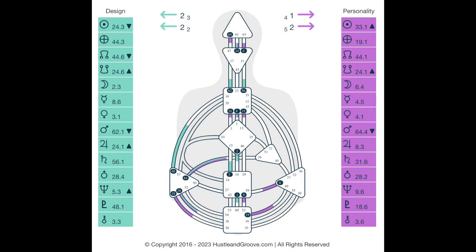So timing is really important for you. Follow your strategy and authority to know when it is correct for you to speak. If you're a reflector and you have some defined gates in your throat center — you're not going to have any channels, but you will have defined gates — then you're always going to communicate best when you're reflecting back whatever you are seeing and experiencing. No matter what, whether you have a defined throat or not, it's always about communicating based on what you see, but also following your strategy.